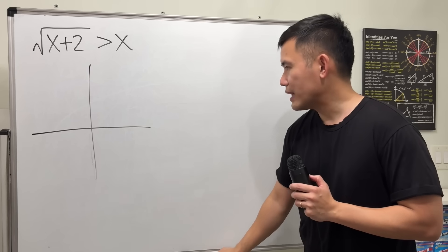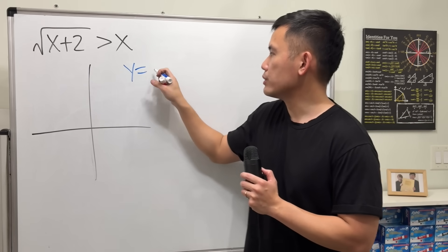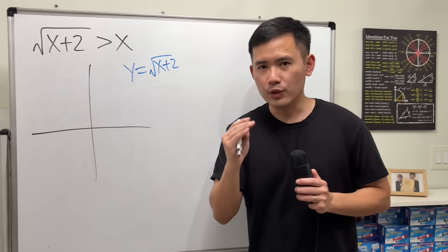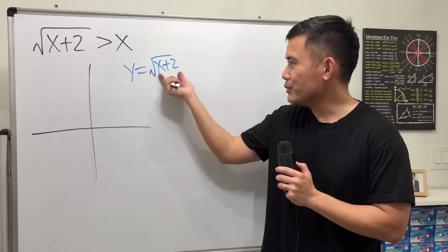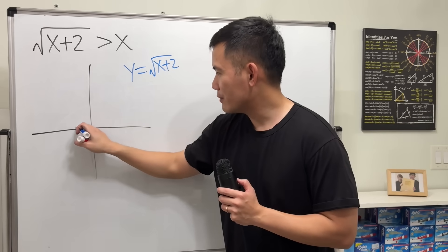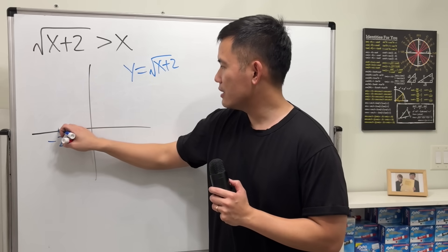The first graph that we will have to get is y equals square root of x plus 2. Now, for the square root of x graph, it looks like this. When we have x plus 2 inside, we move the graph twice to the left. So we have 1, 2. Here is negative 2, we begin, and then the graph looks like this.